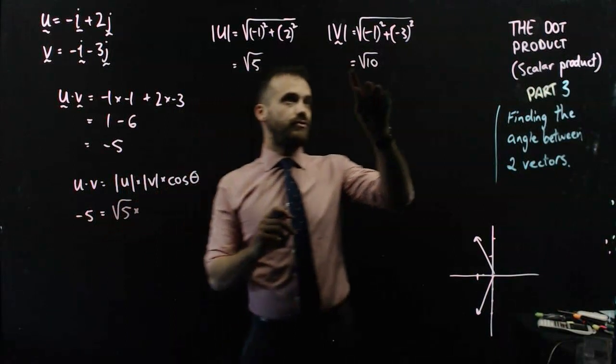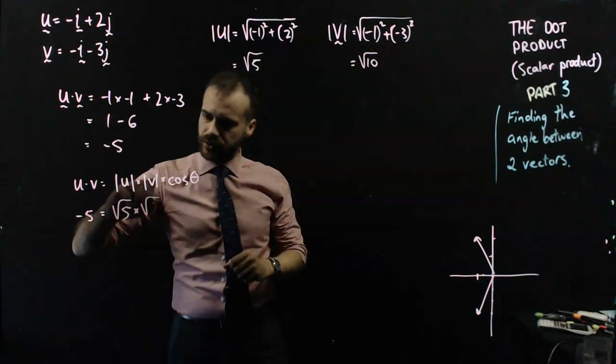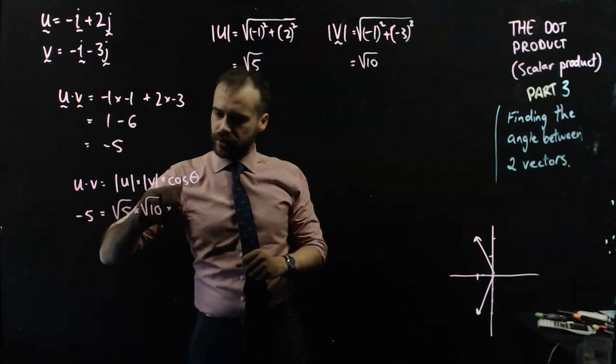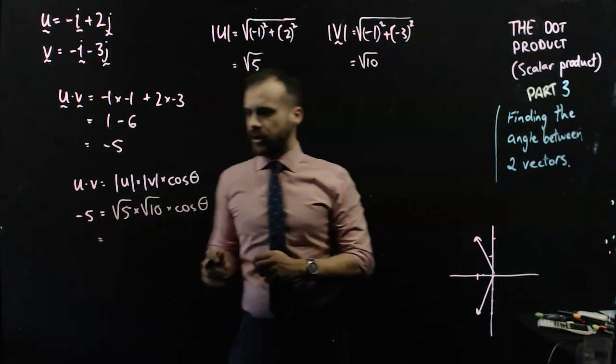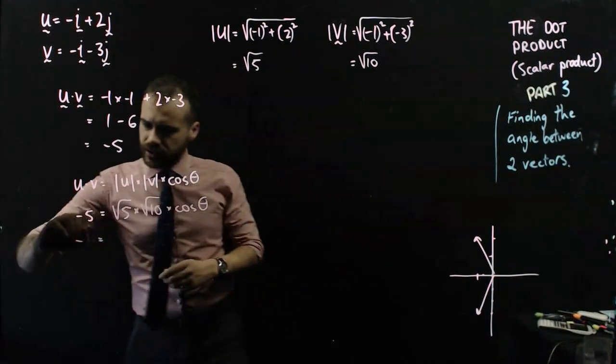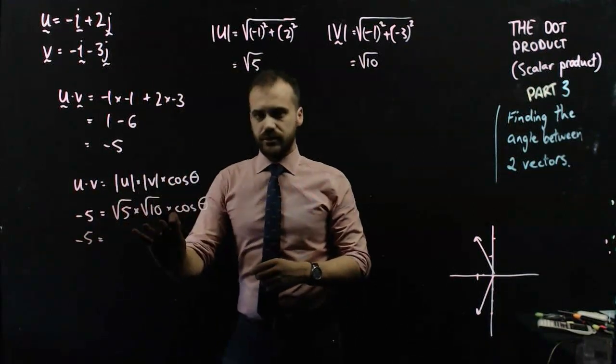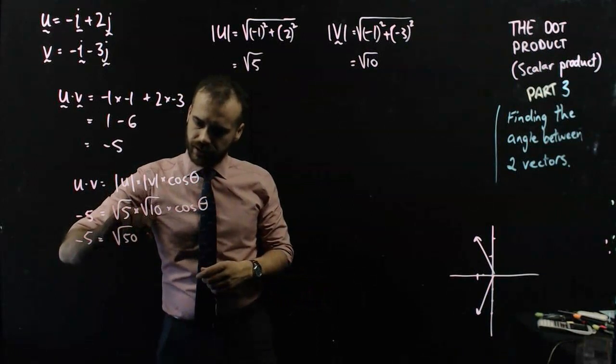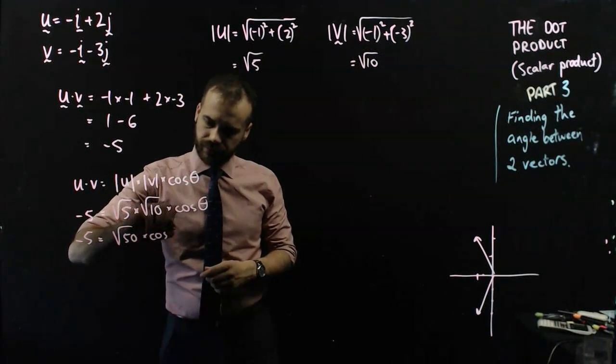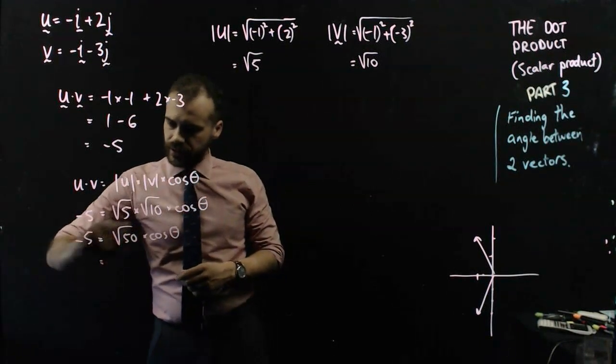And the magnitude of v is root 10, so I can put that in there. And we're going to multiply that by cos theta. So I might just do one more line there, negative 5. I know that root 5 times root 10 is root 50 times cos theta.